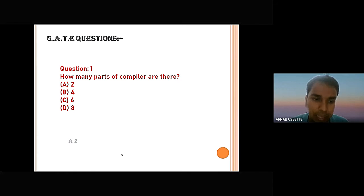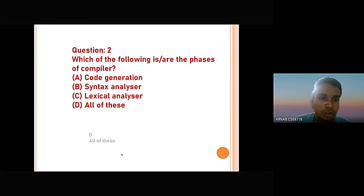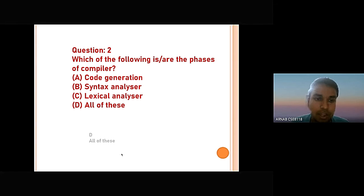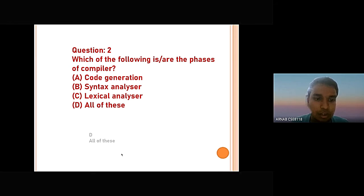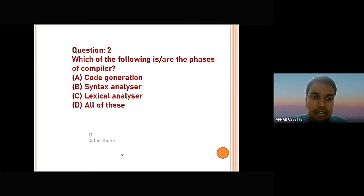The second question is: which of the following is or are the phases of a compiler? Option A is code generation, option B is syntax analyzer, option C is lexical analyzer, and option D is all of these. The answer is that code generation, syntax analyzer, and lexical analyzer are all phases of a compiler. So option D — all of these — is the correct answer.